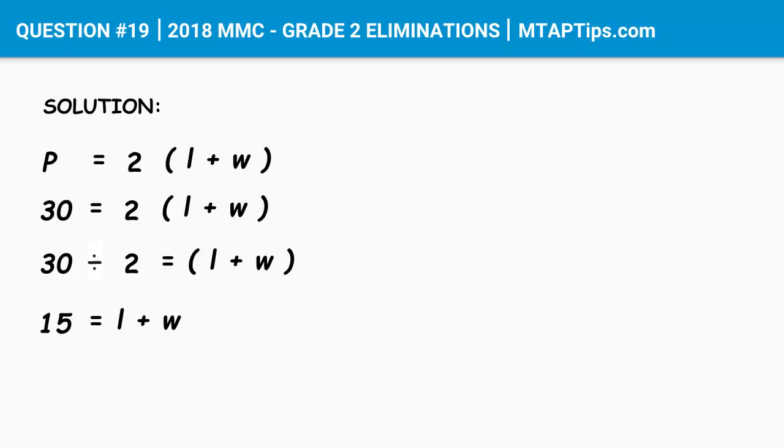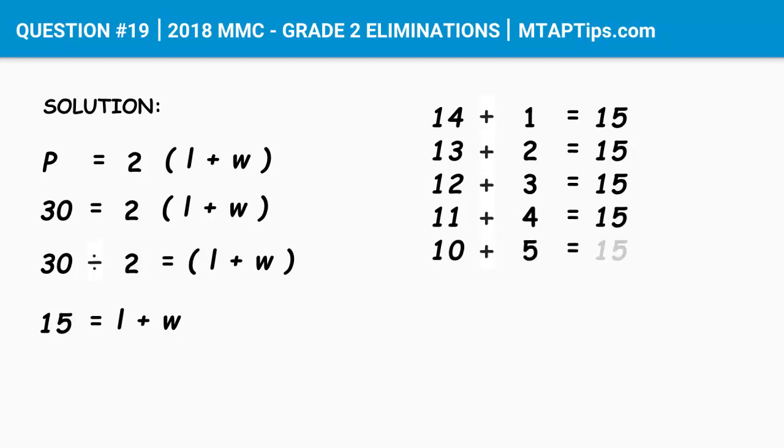So the first number that we can think of is 14 plus 1 equals 15. Then we can do 13 plus 2 is 15 as well. Then 12 plus 3 is 15. 11 plus 4 is also 15. 10 plus 5 is still 15. 9 plus 6, again it's 15. Then 8 plus 7 is also 15.